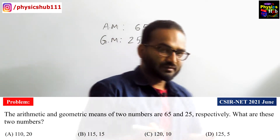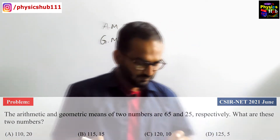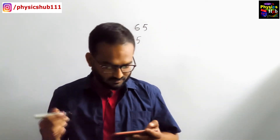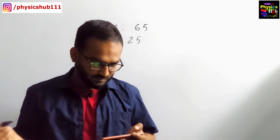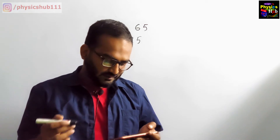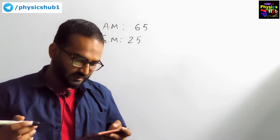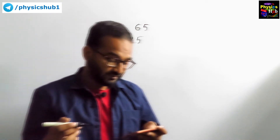What are these two numbers? You are given four options: option A is 110 and 20, option B is 115 and 15, option C is 110 and 20, option D is 125 and 5.